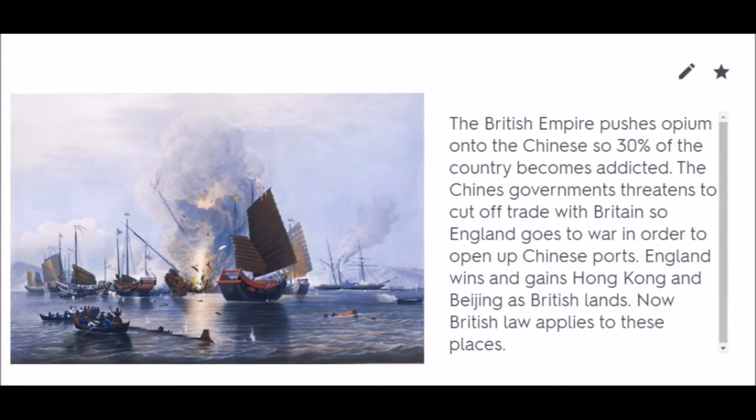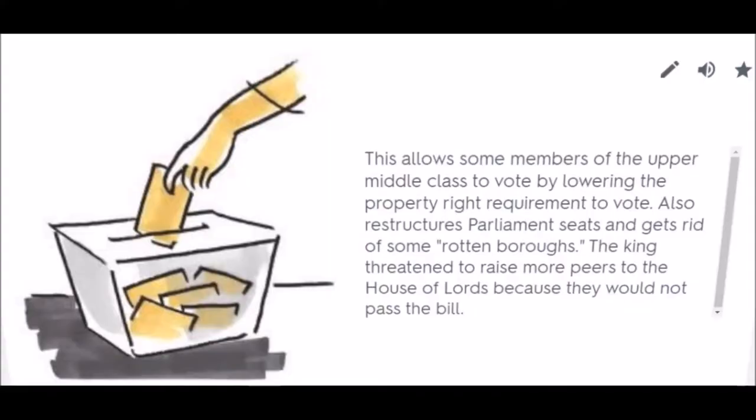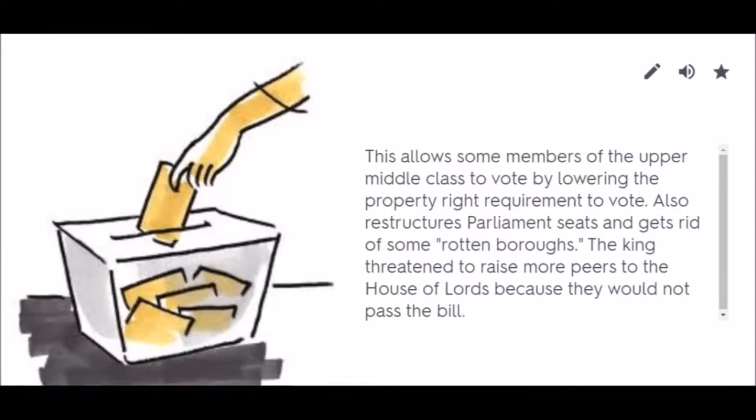Opium Wars. 1832 Reform Bill: This allows some members of the upper middle class to vote by lowering the property requirement to vote. It also restructures parliament seats and gets rid of some rotten boroughs. The king threatened to raise more peers to the House of Lords because they would not pass the bill.